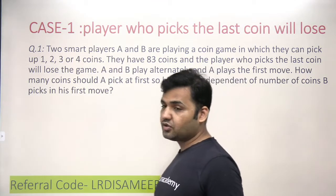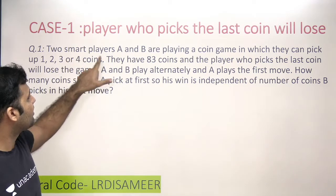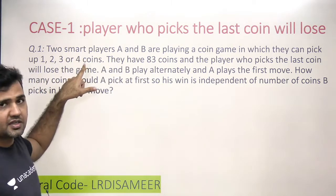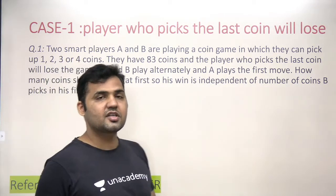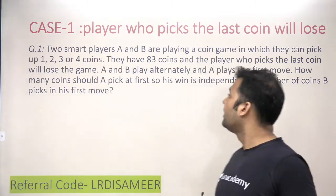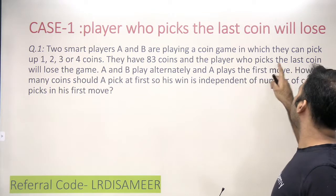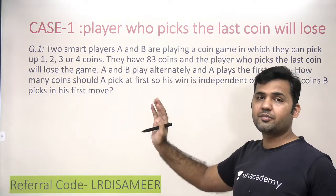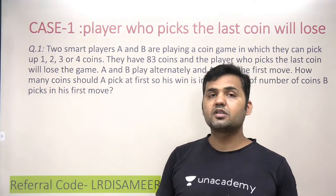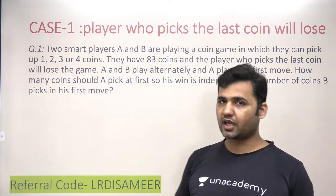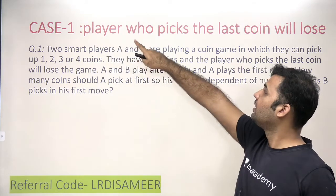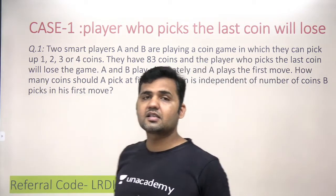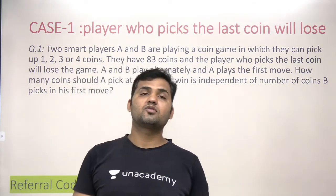Here are the standard instructions for coins and matchstick problems: two smart players A and B are playing a coin game in which they can pick one, two, three, or four coins. The number of coins a player can pick will always be mentioned in the instructions. They have 83 coins, and the player who picks the last coin will lose the game. This is Case 1 — where the person picking the last coin loses.